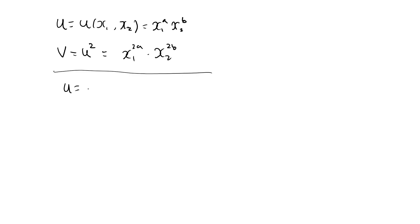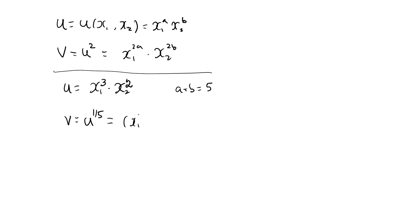So let's say that my utility function is x1 to the 3 times x2 to the 2. a plus b is 3 plus 2, which is 5. So this is not a normalized Cobb-Douglas utility function, as this requires a plus b to equal 1. However, I can always create a new one by taking u raised to 1 over 5. The function u raised to 1 over 5 is strictly increasing, so this is a monotonic transformation. This becomes x1 to the 3, x2 to the 2, raised to 1 over 5. Taking this inside, it's x1 raised to 3 over 5 times x2 raised to 2 over 5.